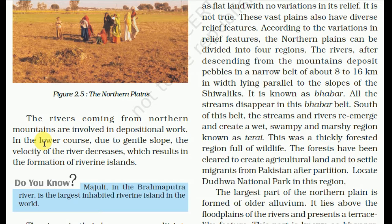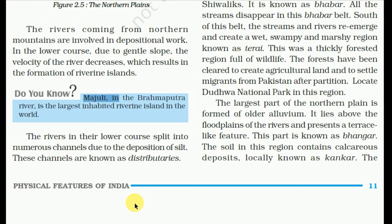The rivers coming from the northern mountains are involved in depositional work. In the lower course, due to the gentle slope, the velocity of the river decreases, which results in the formation of river islands. Majuli in the Brahmaputra River is the largest inhabited river island in the world. In the lower course, rivers split into numerous channels due to deposition of silt — these channels are known as distributaries.